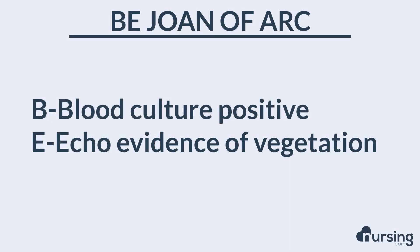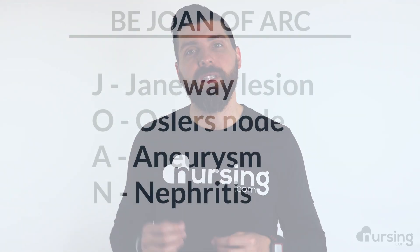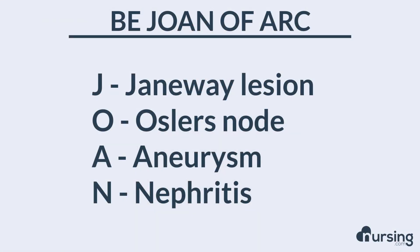The B stands for blood culture positive, so anytime we do blood cultures, it's going to show a positive infection. E stands for echo evidence of vegetation — on an echocardiogram, you can actually see this growth along the edges of any of the valves that indicates vegetation.